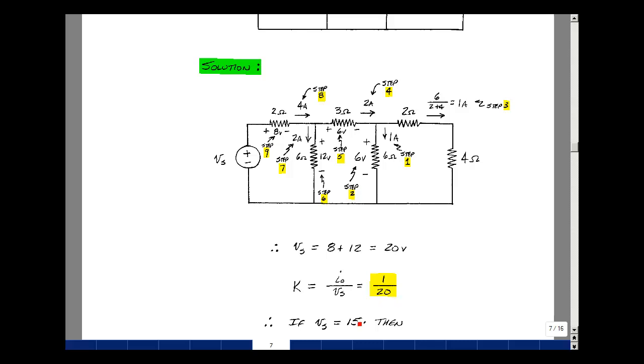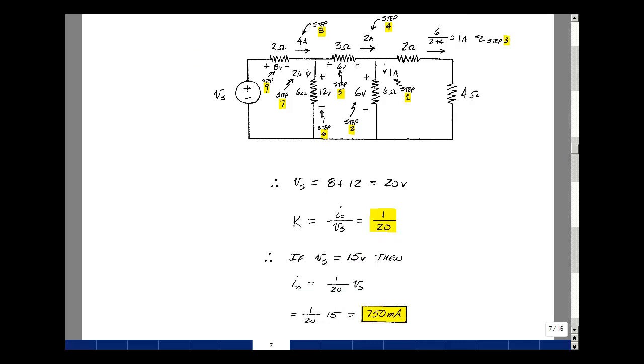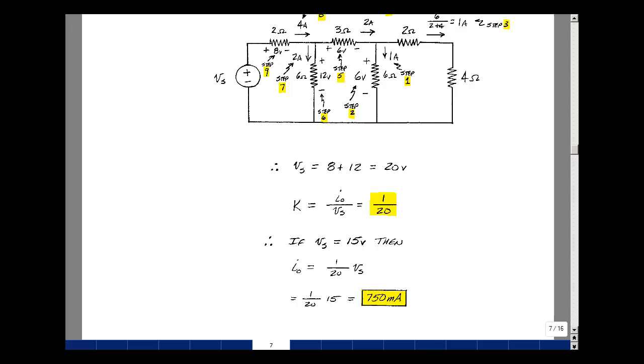We can then solve for I0 as our proportionality factor times the value of Vs, bringing this over here, and now put in the value of 15 volts. And it gets 750 milliamps. And this is supplemental problem 3.7.